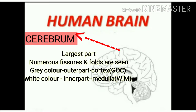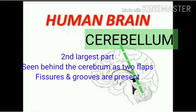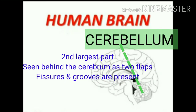So we have the gray outer cortex, and then the inner white color, which is called the white inner medulla. Next one is the cerebellum. Do you see the cerebellum? Like the cerebrum, it also has fissures and grooves.